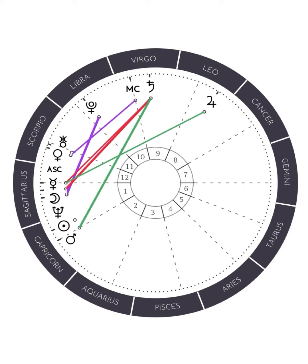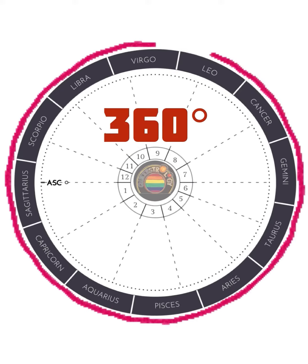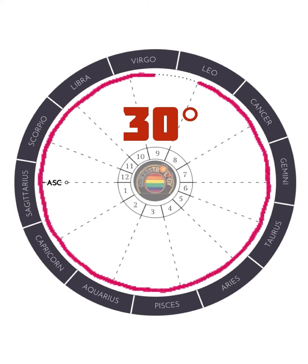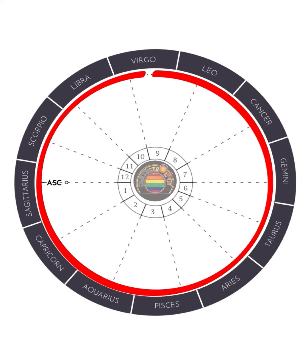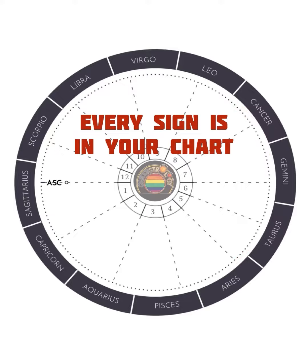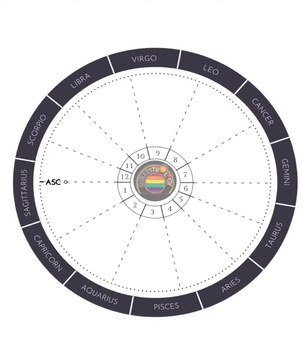Your natal chart is 360 degrees around. Each of the 12 signs have 30 degrees. Notice that all 12 signs are present in your chart — you have all 12 signs in your chart. Where they happen to land, that's a different story.